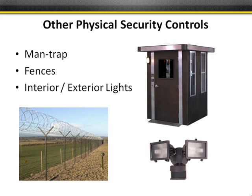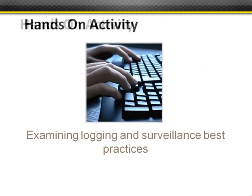Man traps are a great perimeter detection control that prevents piggybacking — only one person can pass through at a time, requiring the first door to close before the second opens, with the first door locked while the second is open. Fences work both externally at a facility and internally in large warehouses to protect equipment under lock and key. Interior and exterior lights deter and detect activity under cover of darkness.